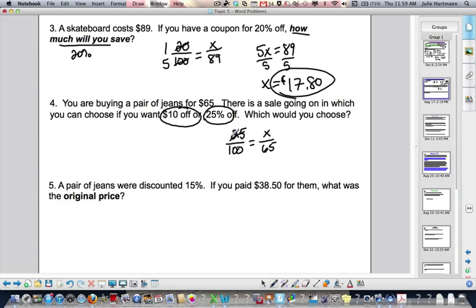Okay? So, 25 and 100, you're going to reduce to 1 and 4. Cross multiply. 4x equals 65. Divide by 4.